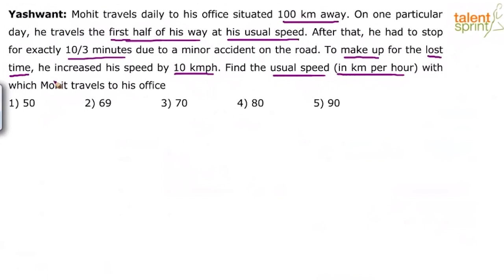One way to solve this is to equate the time. You know the time difference is 10/3 minutes, so you can say: time in the first case minus time in the second case equals 10/3. Time equals distance divided by speed, so you can use that to get the answer. Let me explain that method.